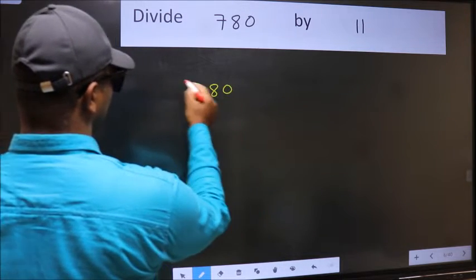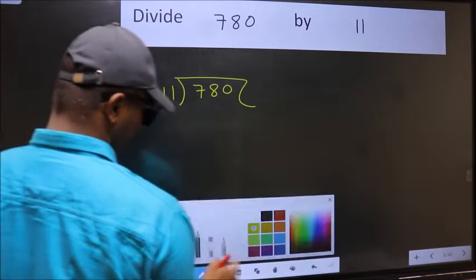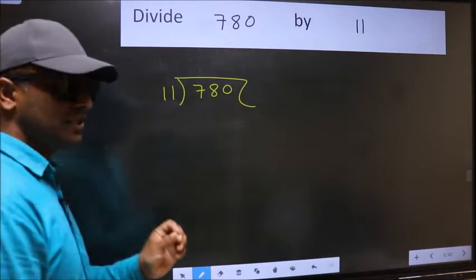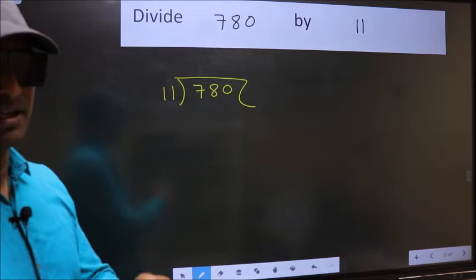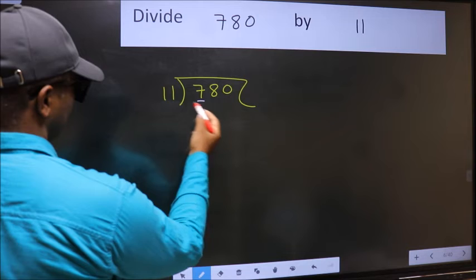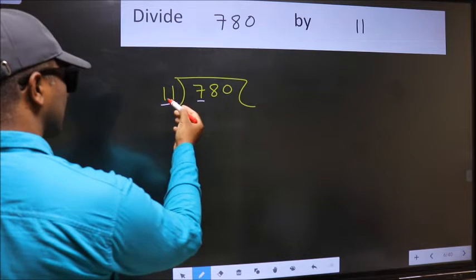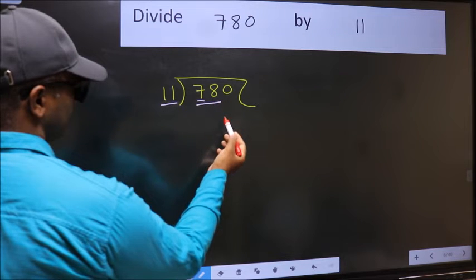780 and 11 here. This is step 1. Next, here we have 7 and here 11. 7 is smaller than 11, so we should take two numbers: 78.